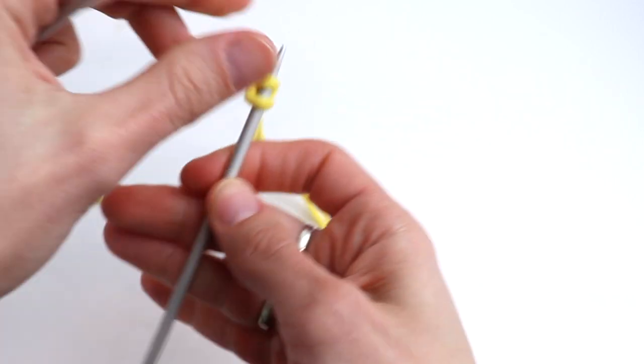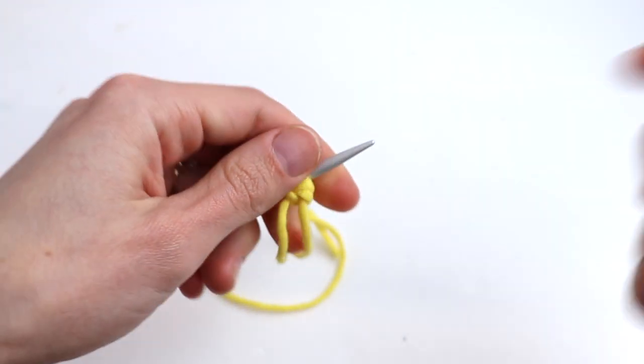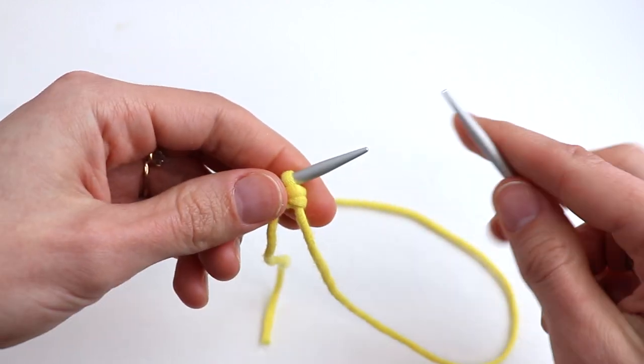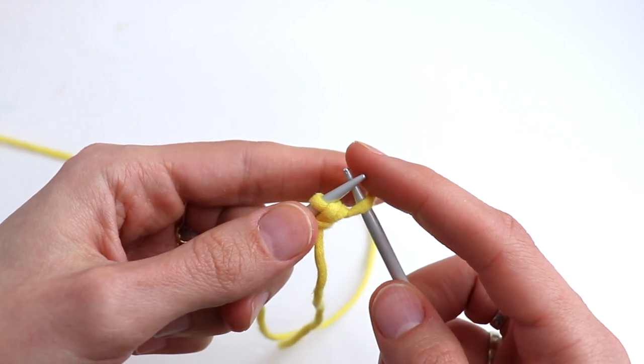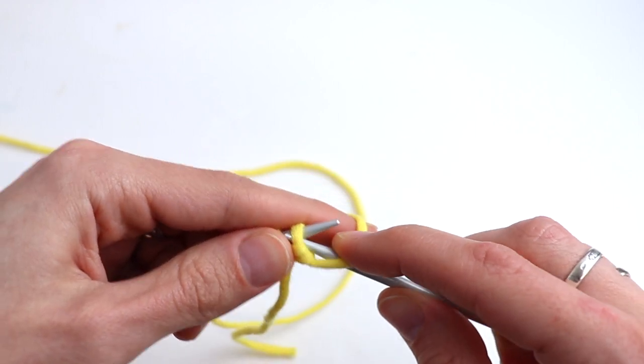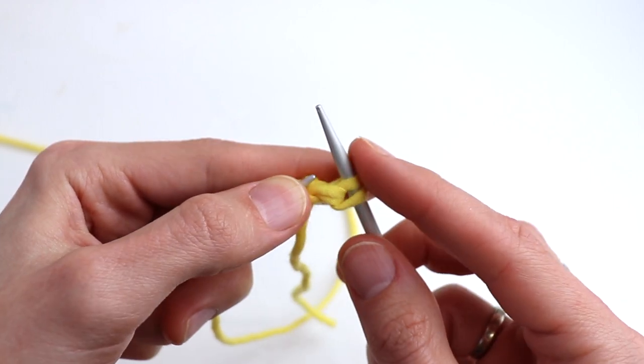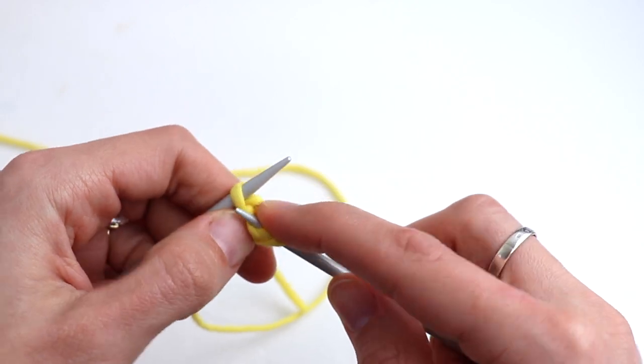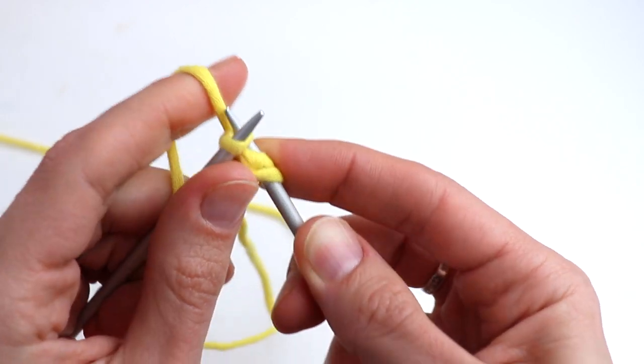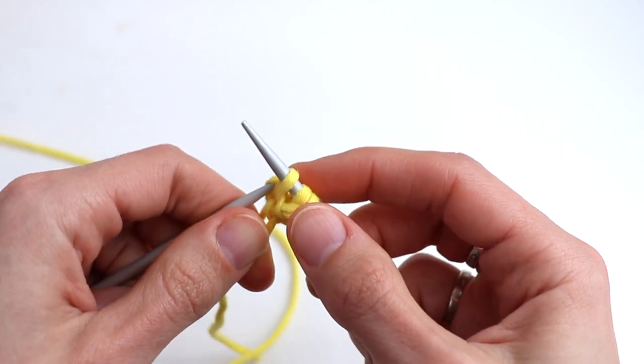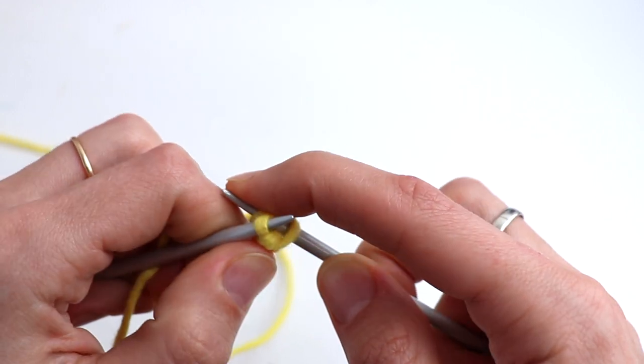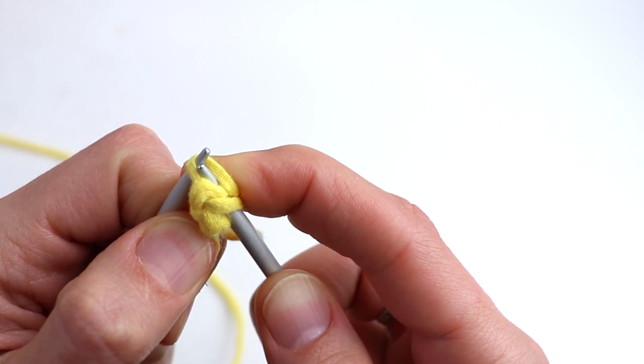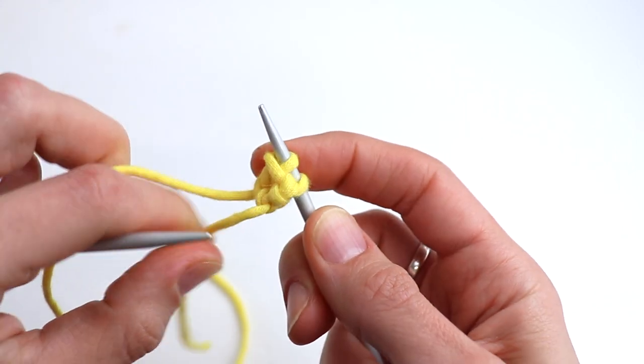And again we have two stitches. Turn. And that's what we are going to repeat. Start with yarn over right away, then slip the next stitch purlwise, knit the last stitch. Now with the tip of left hand needle pick up this slip stitch and slip it over the last stitch.